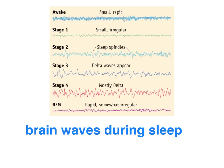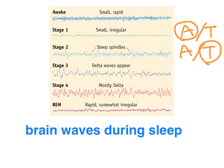During stage 1 of non-REM sleep, it's a light sleep with a combination of alpha and theta waves, predominantly alpha — easy to wake the person up. During stage 2, it's also a combination of alpha and theta, but the brain waves are getting lower in frequency and higher in amplitude, predominantly theta. During stage 3, a deep sleep, delta brain waves first appear on the EEG readings but it's predominantly theta. During stage 4, the deepest sleep, it's a combination of theta and delta, predominantly delta.